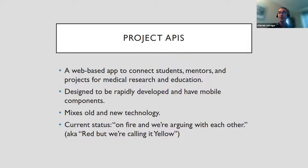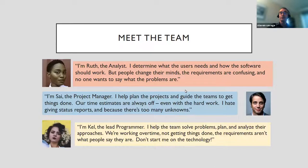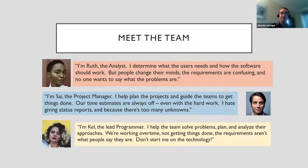Project APIS mixes old and new technology, and its current status is on fire — what we call red, but we're really saying it's yellow on the status report. Let's get to know the people in Project APIS and walk through this imaginary process to see Agile being implemented. We have Ruth the analyst — she determines what user needs are, but people change their minds, requirements are confusing, and no one wants to say what the problems are. Cy the project manager is planning, but everything is off — he hates status reports and there are too many unknowns. Kel the lead programmer is solving problems, working overtime, and the requirements aren't what people say they are.